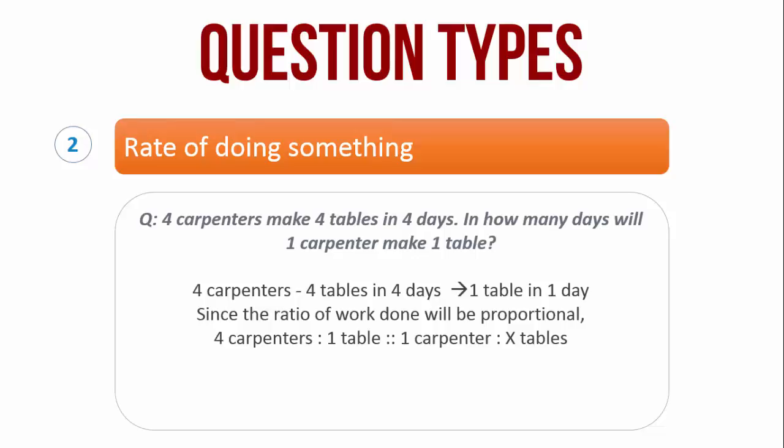Then, the ratio of 4 carpenters to 1 table will be equal to the ratio of 1 carpenter doing x tables. We have to find x here. Using the cross product, 4x is equal to 1 or x is equal to 1 by 4. Therefore, 1 carpenter makes one-fourth of a table in 1 day.